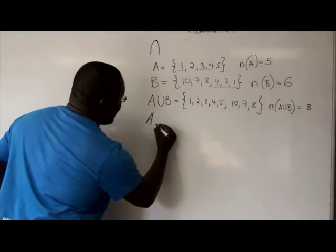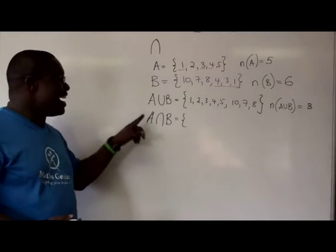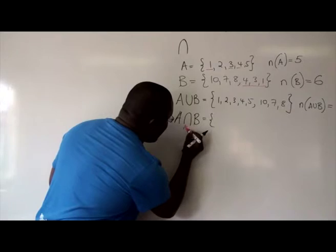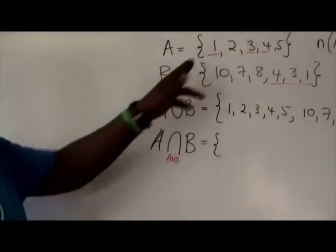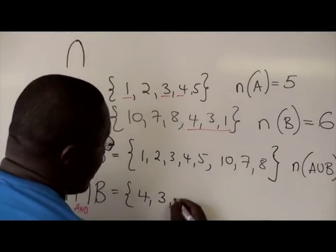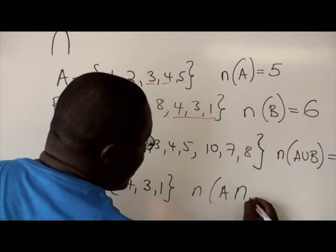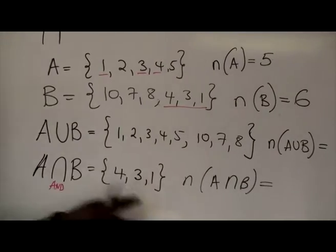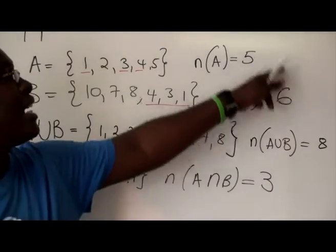So now, A intersection B. We are saying what elements are in A and, keyword is what? And are also in B. Obviously, we now know what they are. The ones in red here. It's 4, 3, and 1. And what is N, A intersection B? What is the number of those elements that are in both A and B? We can find that it's 3. So 8 plus 3 should account for everything.